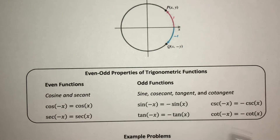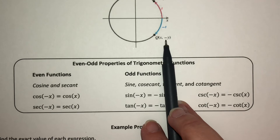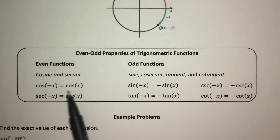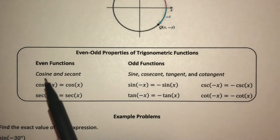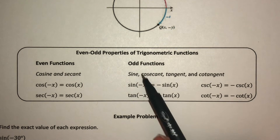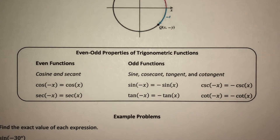Odd functions — sine, tangent, cosecant, and cotangent — require a negative y-value when a negative angle is used, which simply changes the overall sign. So for even functions like cosine and secant, a negative in the argument disappears entirely. For odd functions, you can move the negative out in front. This means we may not need to find a coterminal angle every time.